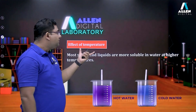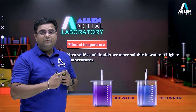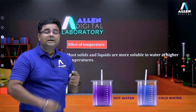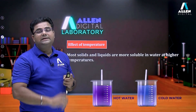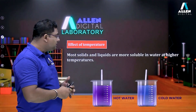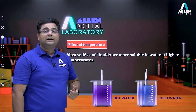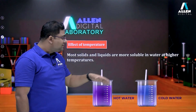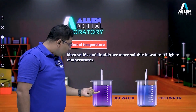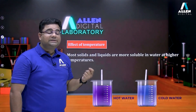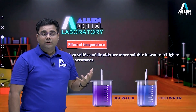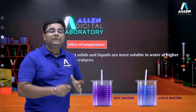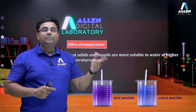The first factor is the effect of temperature. As we increase the temperature of the solvent, the solubility of the solute also increases — solubility is directly proportional to temperature. For example, if we place the same amount of potassium permanganate in hot water and cold water and stir, it dissolves faster in hot water, confirming that higher temperature increases solubility.